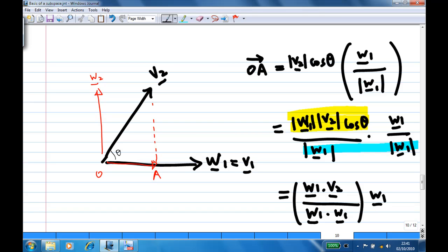So the moment you get OA, then w2 we can find is just v2 minus OA.